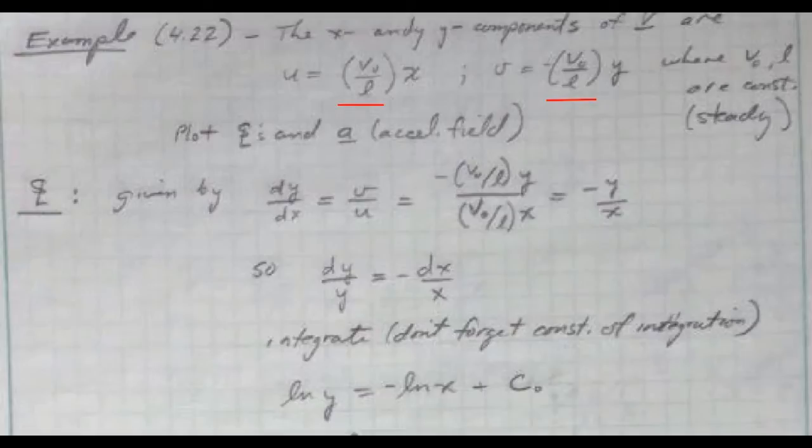It's a steady field. And we want to plot the streamlines, which indicate the velocity field, and the acceleration field. Let's look at the velocity field first. So remember, the key expression is that the velocity field streamlines have a derivative dy/dx that is equal to v over u.